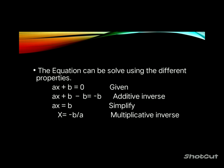The equation can be solved using different properties. So ax plus b equals zero; applying additive inverse gives ax equals negative b, then x equals negative b over a.